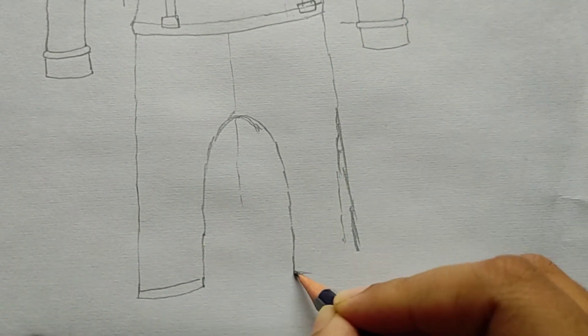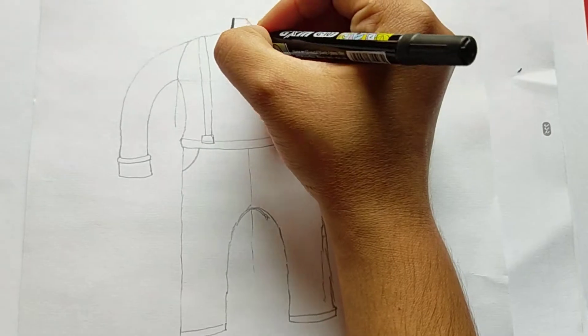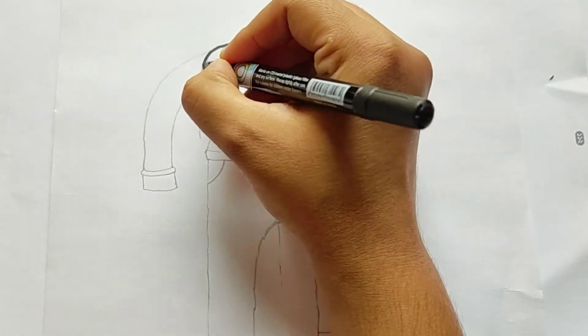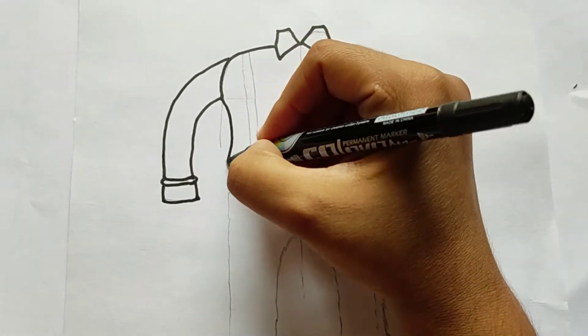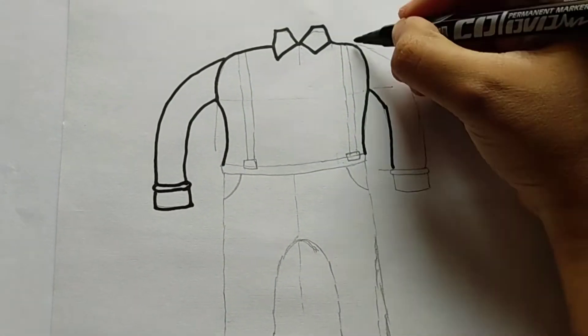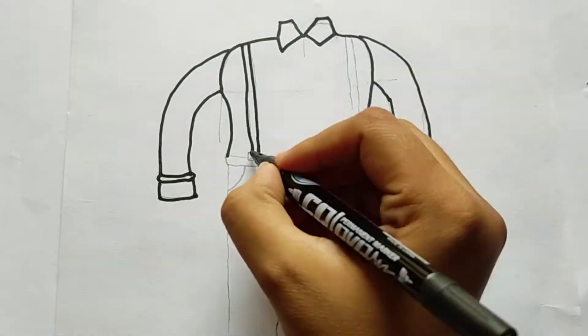Today I am going to share some information about Blippi. I collected the information from Wikipedia. Blippi's real name is Steven John. Steven John was born May 27, 1988.